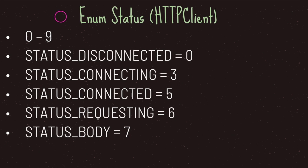The second enumeration type is status. Even though you will most likely never use this with the HTTP request node, let's go over it briefly. The status enumeration type comes with ten different options. The ones that might be most appropriate for you would be: disconnected, connecting, connected, requesting, and body.